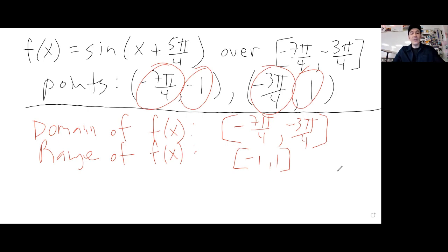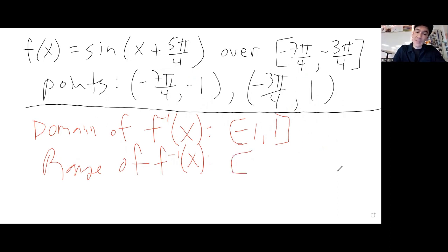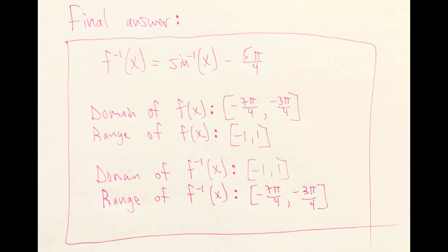Now I want you to give me the domain and range of the inverse. The domain of f inverse is the range of f, which was negative 1 to 1. And then the range of f inverse is the domain of the original. So everything is backwards — totally backwards. This is how you find the inverse and then the domain and range of both the original and the inverse.